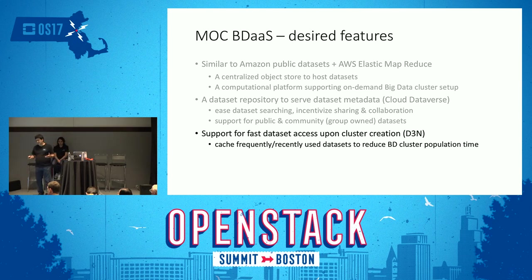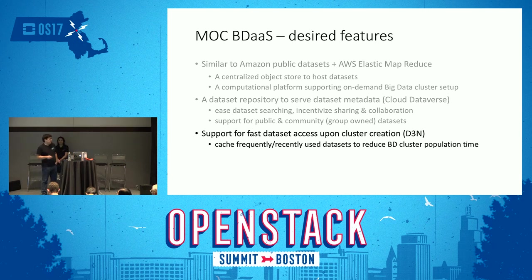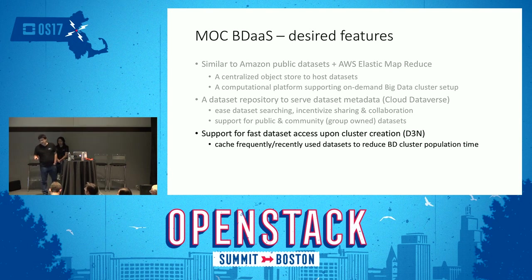After investigating usage patterns, we realized some datasets are periodically updated — like weather, traffic, or social network datasets collected every day, hour, or week. The usage pattern is unusual: the more recent the dataset, the higher the usage. Using default storage mechanisms would cause load and network imbalances, so we realized we needed to provide a caching feature within our data center.